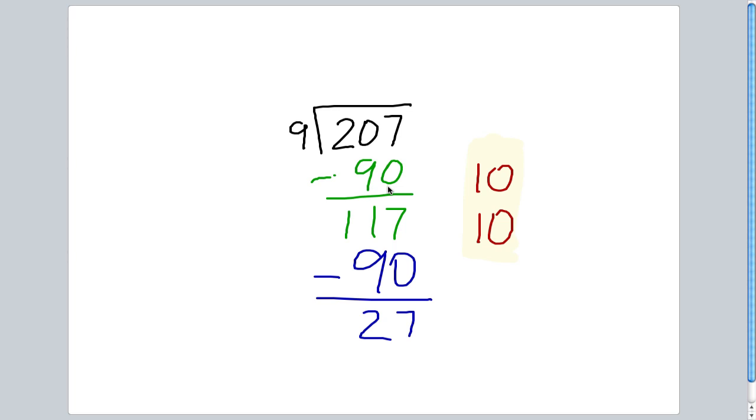I recognize that there are 3 9's in 27. And if I take that away, I'm left with nothing.